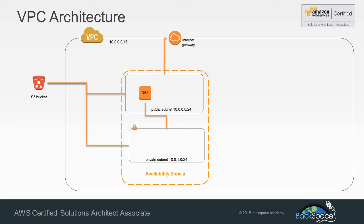The first thing we're going to do is use the VPC wizard to create a VPC with public and private subnets inside a single availability zone, simply to speed up the process. The VPC wizard is not perfect for every application, so we're going to fully understand exactly what it has done and modify and improve upon it as needed.